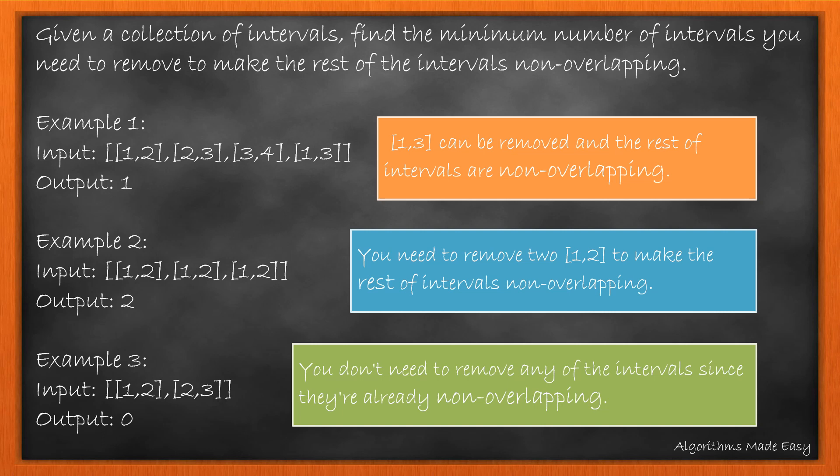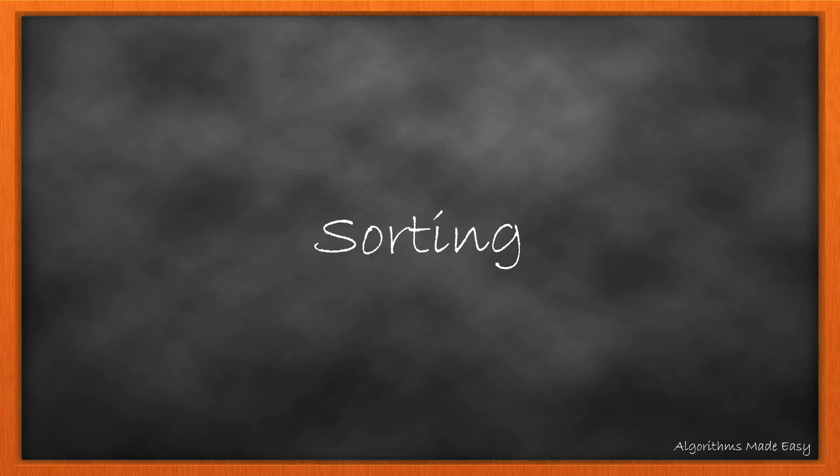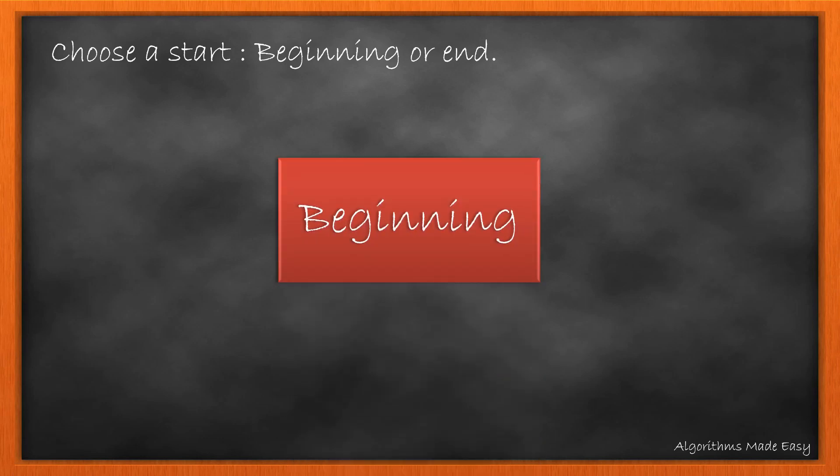While for example 3, we don't need to remove any of the intervals since they are already non-overlapping. As there is nothing given about the input being sorted, we will first sort the input based on the start value of the interval. After sorting, we need to decide which direction we need to start from – beginning or the end. Let's choose to start from the beginning.